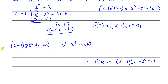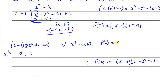Comparing the x³ terms: on the left side, x times ax² gives ax³, and there are no other x³ terms. On the right side there is just 1·x³, so a = 1. So far f(x) = (x - 1)(x² + bx + c). Now I'll find c by comparing the constants, because the highest and lowest order terms are easiest.